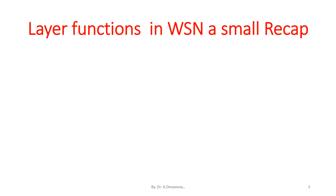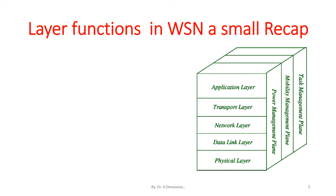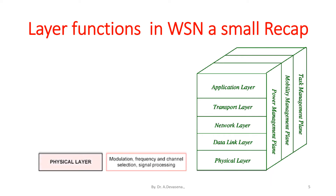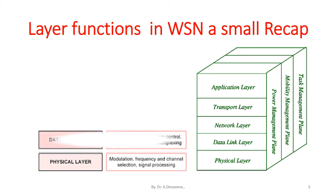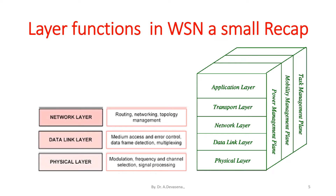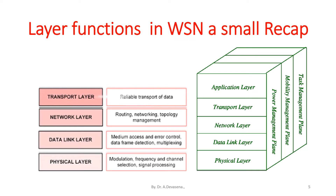Here is a small recap of layer functions in wireless sensor networks, represented using the OSI model. The function of the physical layer is to provide modulation, frequency, channel selection, and signal processing. The function of the data link layer is medium access control, error control, data frame detection, and multiplexing. The function of the network layer is to provide routing and network topology management. The function of the transport layer is to provide reliable transport of data.